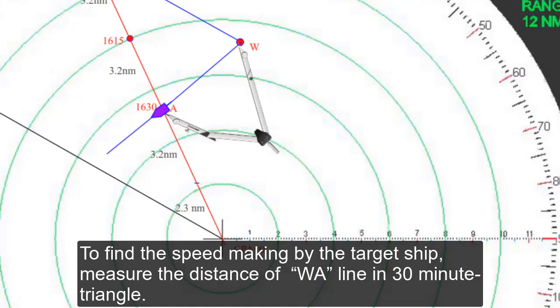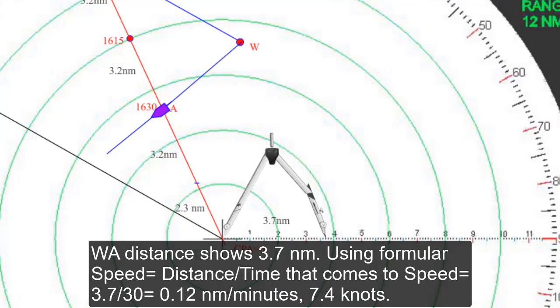To find the speed made by the target ship, measure the distance of WA line in the 30-minute triangle. WA distance shows 3.7 nautical miles.